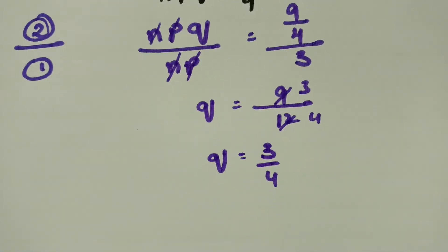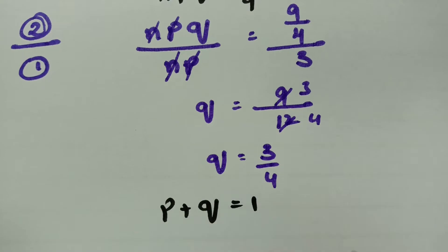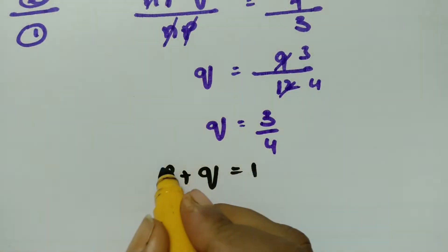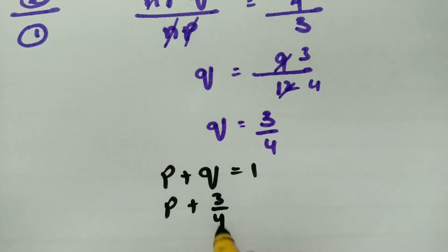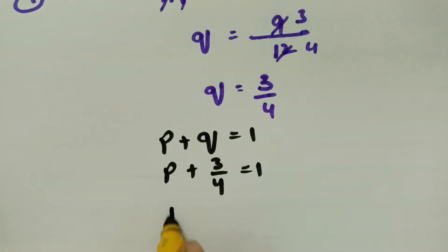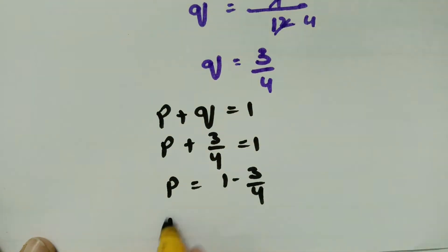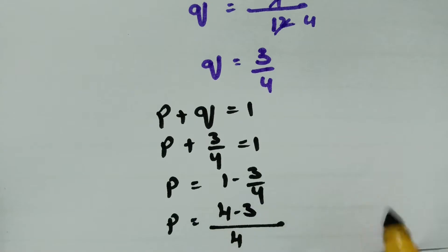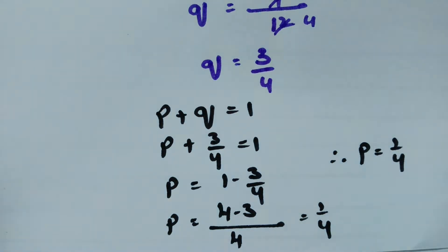As you know, the total probability is always equal to 1, so p plus q is always equal to 1. The q value is 3 by 4, so p will be 1 minus 3 by 4. Taking 4 as LCM, this will be 4 minus 3 divided by 4, which equals 1 by 4. So we got the value of p as 1 by 4.